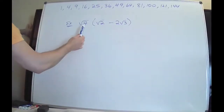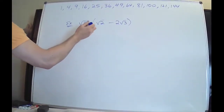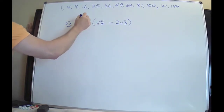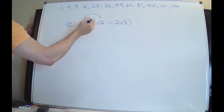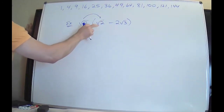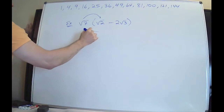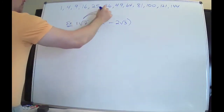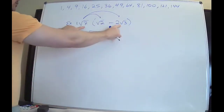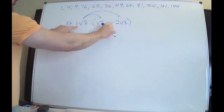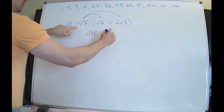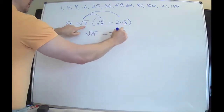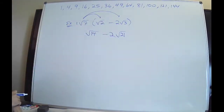Multiplying radicals is very easy. We're going to multiply the numbers on the outside and multiply the numbers on the inside — distribute one at a time. Radical seven times radical two: multiply the numbers inside and get radical 14. Now one times negative two is negative two, and radical seven times radical three gives radical 21.